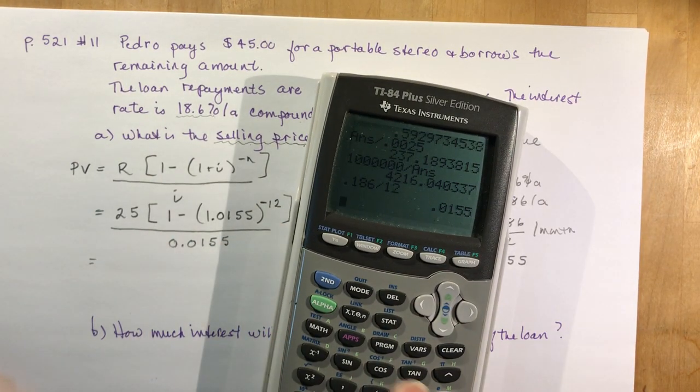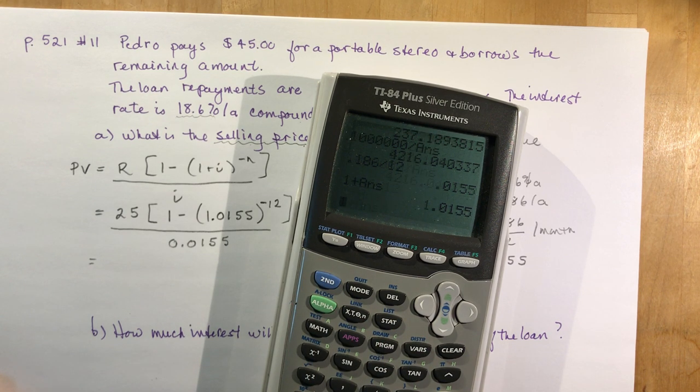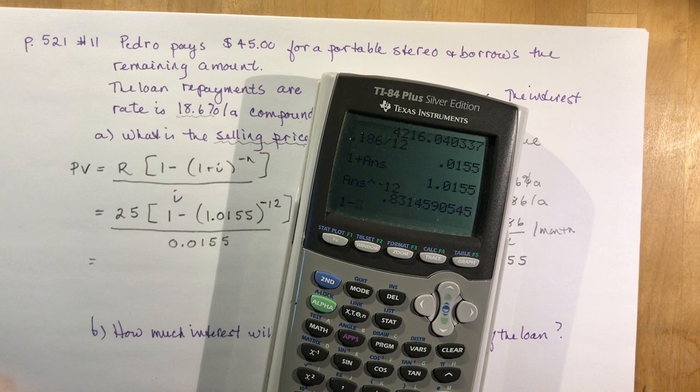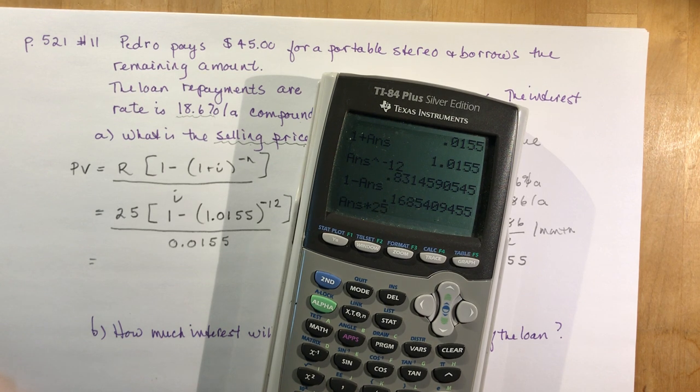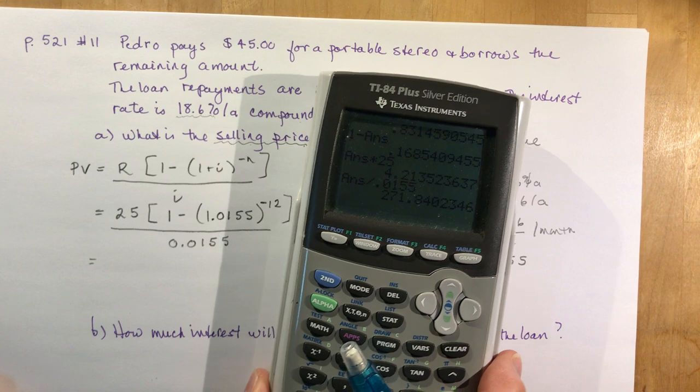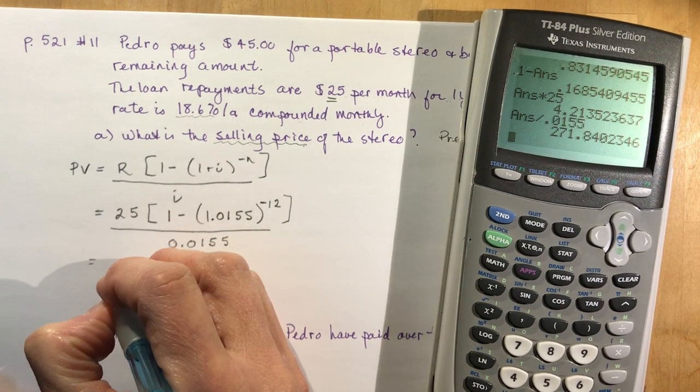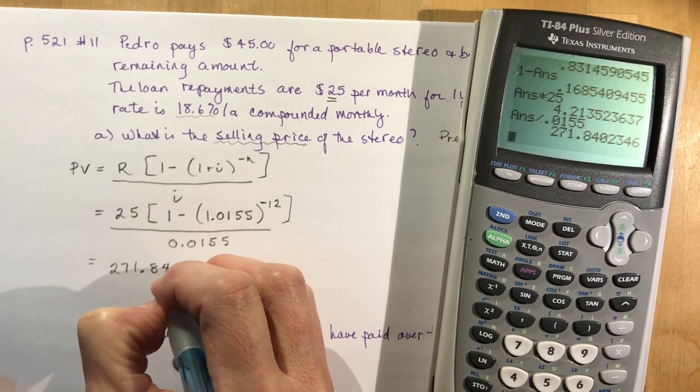Again, on my calculator I would do the exponent first. So 1.0155 to the power of negative 12. I'm going to do 1 minus second answer. That gives me 0.16854. I'm going to multiply it by 25 and divide it by 0.0155. And I get 271.84.